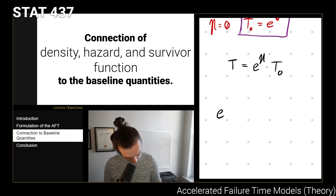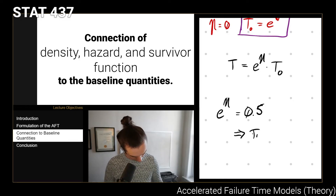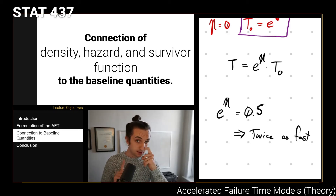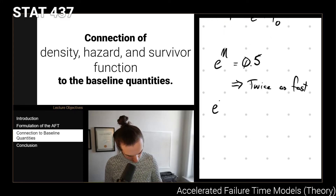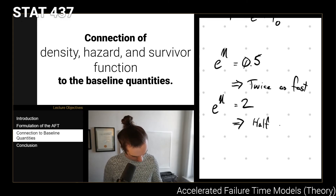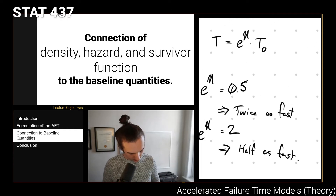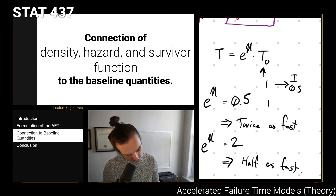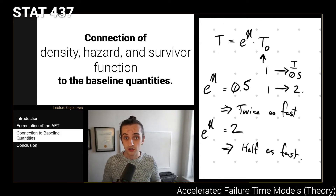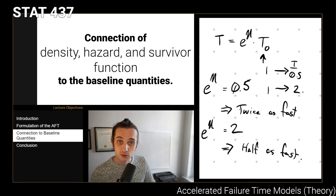If e^eta equals 0.5, then the person ages twice as fast as normal — twice as fast as they would if they didn't have the covariates making e^eta equal 0.5. By multiplying the baseline time by 0.5, we're saying they're aging twice as fast. Similarly, if e^eta equals 2, then they age half as fast. So when t0 is 1 and e^eta is 0.5, t equals 0.5; when e^eta is 2, t equals 2 — it's about whether you're aging half as fast or twice as fast over the same period of time.